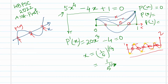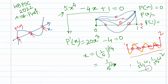This is the only real critical point. The other two roots of 20x³ - 4 = 0 are complex — they involve the cube roots of unity ω and ω². So x = (1/5)^(1/3) is the sole real critical point, and we need to verify whether it lies inside the interval (0, 1).